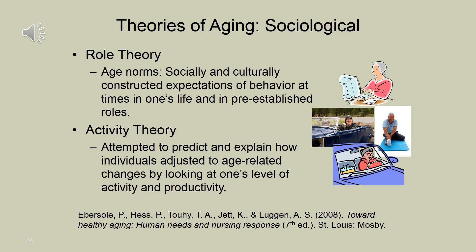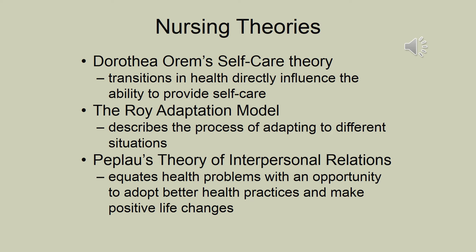There are also sociological theories of aging. Role theory focuses on age norms, where socially and culturally established roles and expectations influence behavior and aging. Activity theory attempts to predict and explain how individuals adjust to age-related changes by looking at activity and productivity. These biological and sociological theories of aging can often be applied to nursing practice and how you would view caring for particular clients. Many nursing theories are based on these other types of theories and are applied to nursing by the theory's developer.